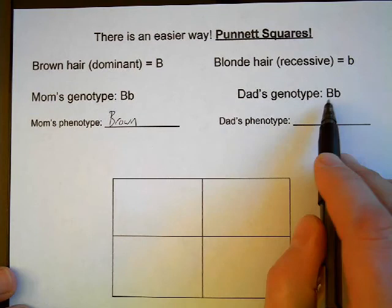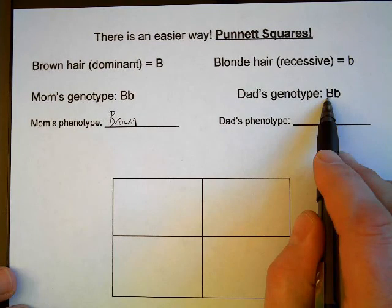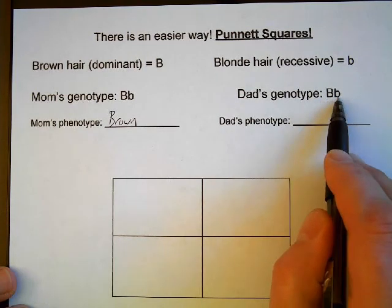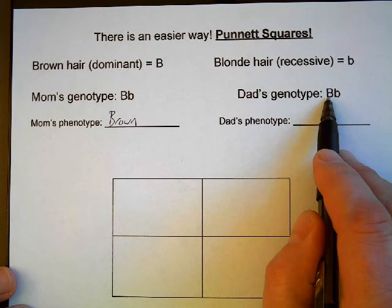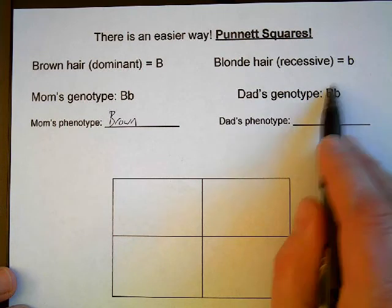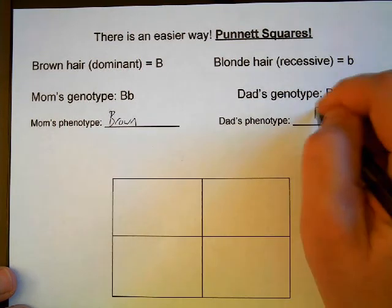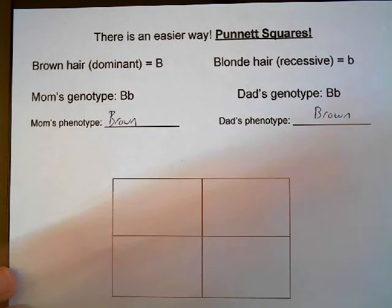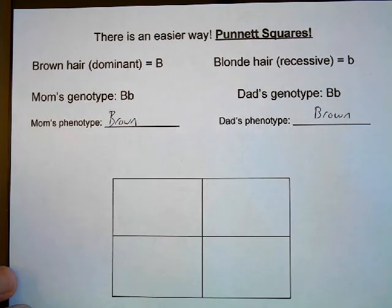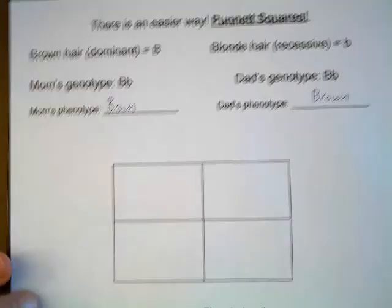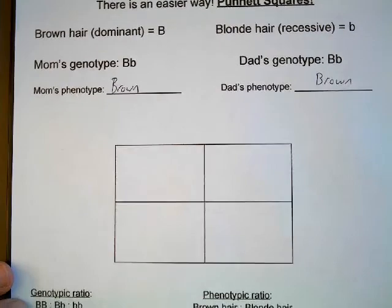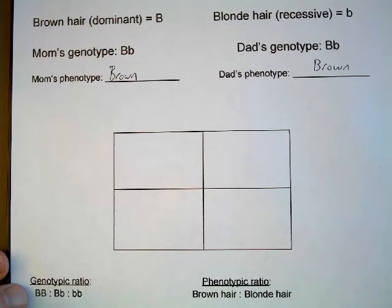The same is true for the dad. The dad has a capital letter that codes for brown hair and a lowercase letter that codes for blonde hair. The dominant gene, always represented with capital letters, covers up the recessive gene, so dad would also have brown hair. When trying to figure out a Punnett square for different individuals, we take the genotypes of the individual and place them on the top and side of the Punnett square.